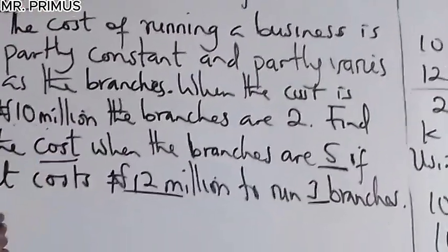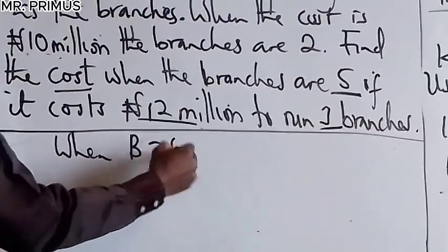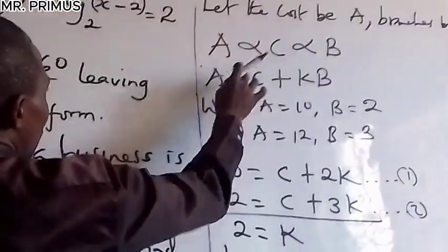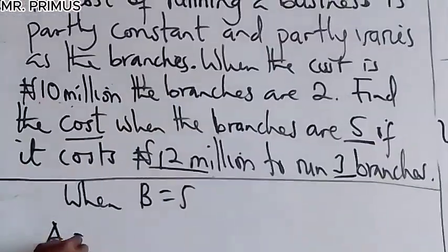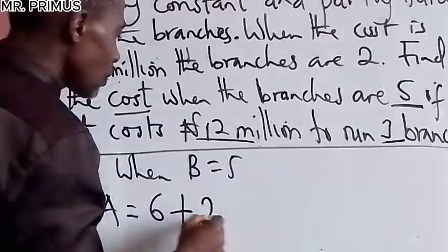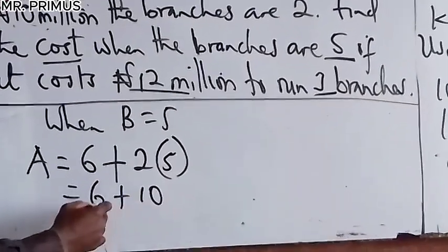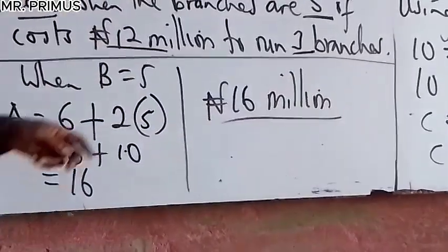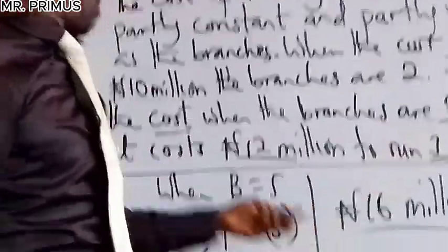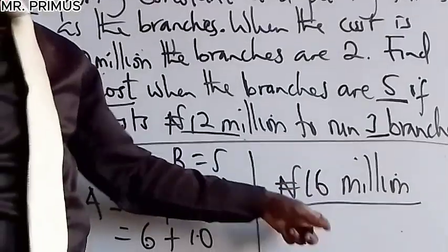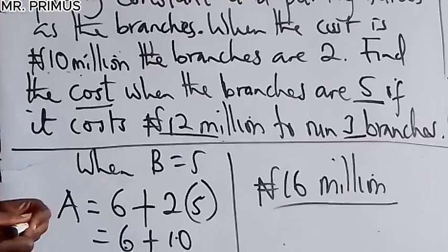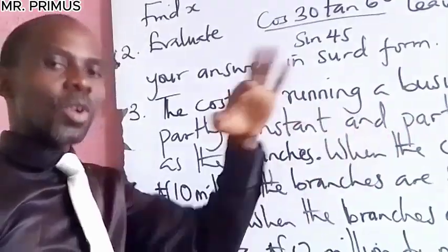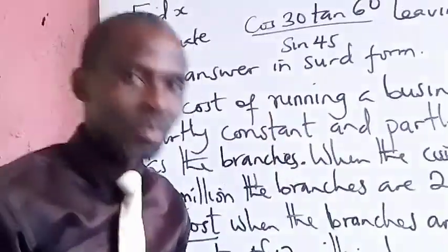Now the question asks for the cost when there are 5 branches, so B = 5. Using A = c + kB with c = 6 and k = 2: A = 6 + 2(5) = 6 + 10 = 16 million. So the cost is 16 million naira. Many students might guess proportionally and get 25 million, but that's wrong — this is part one; parts two and three are coming. Please subscribe and share the video.